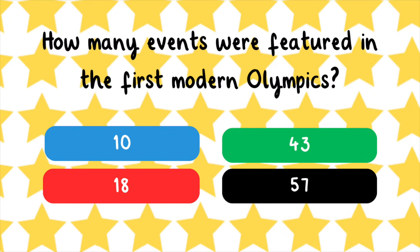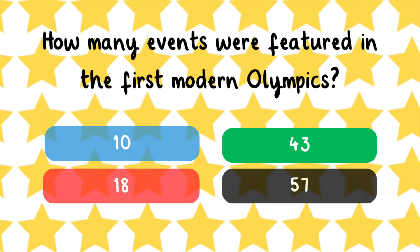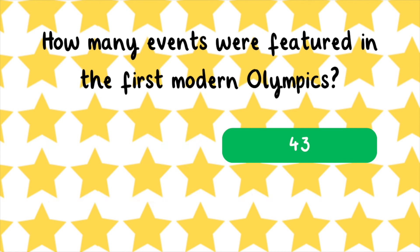How many events were featured in the first modern Olympics? 10, 18, 43, or 57? 43 events were featured in the first modern Olympics.